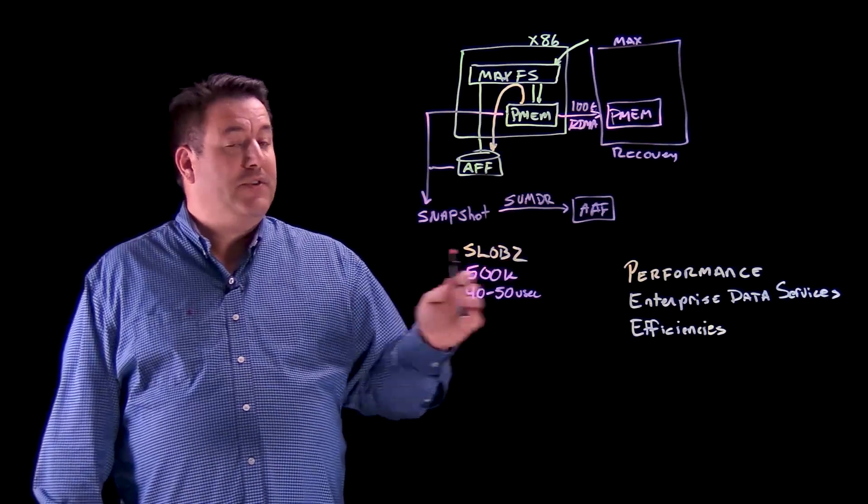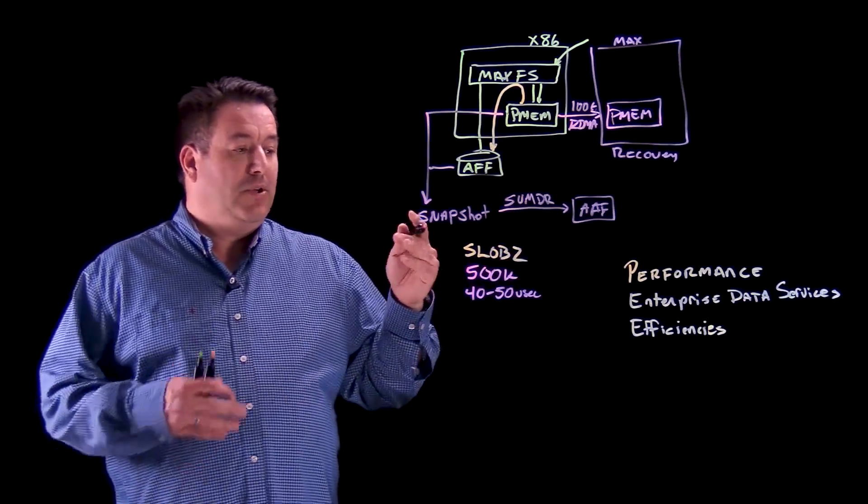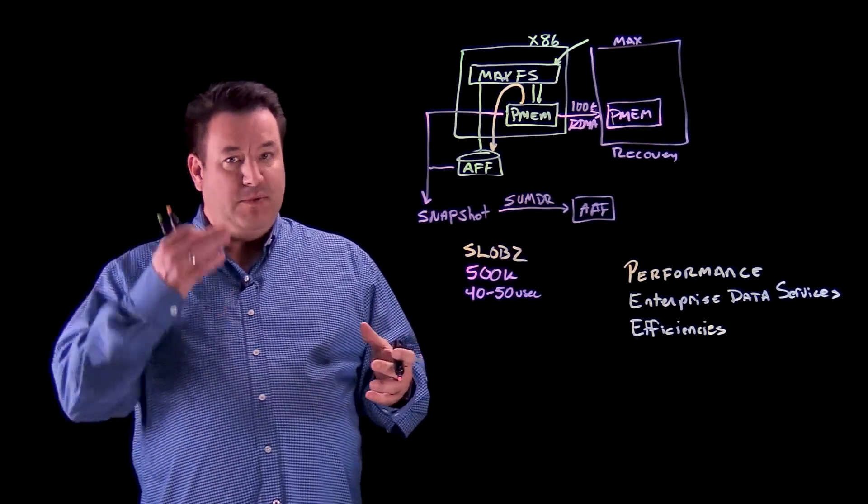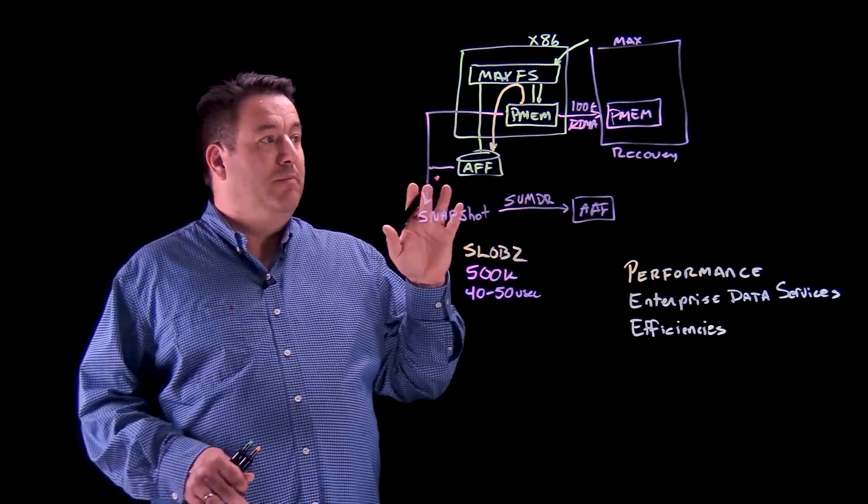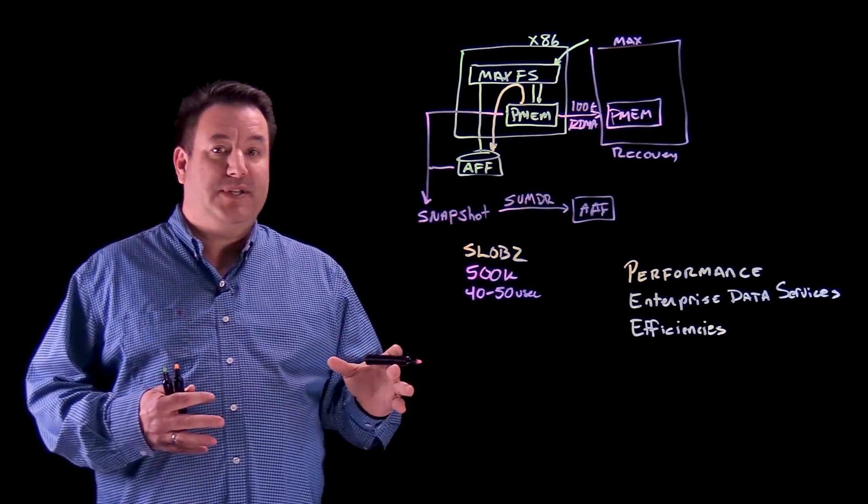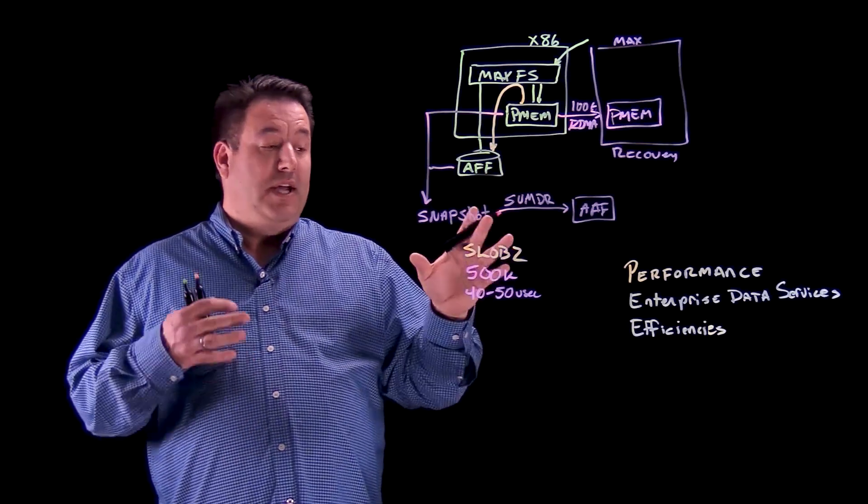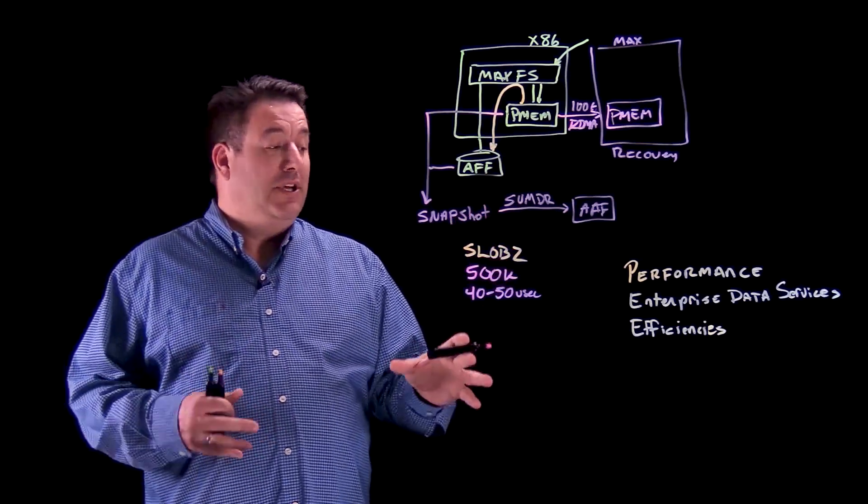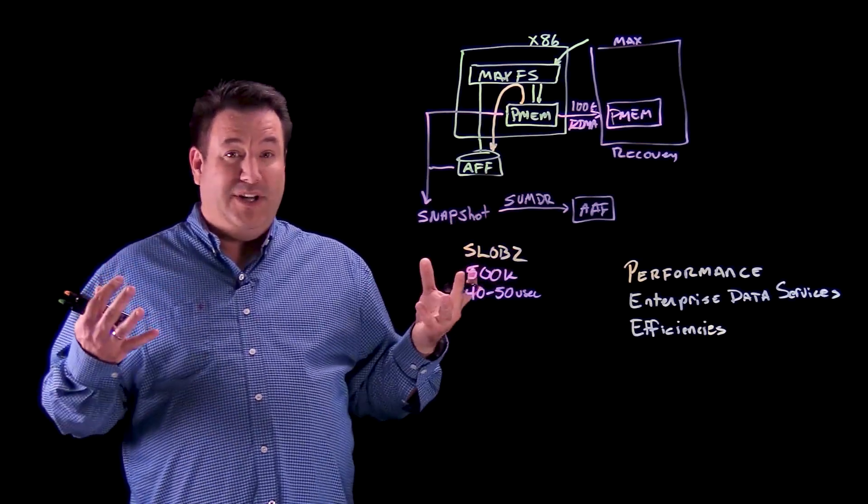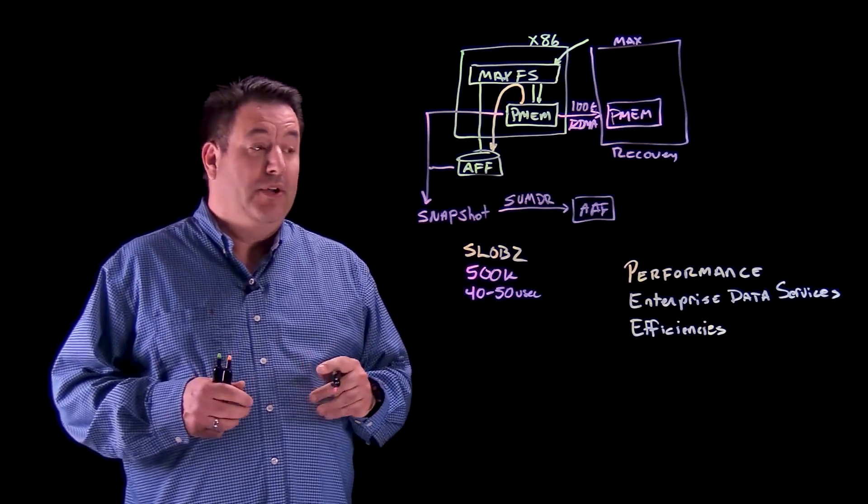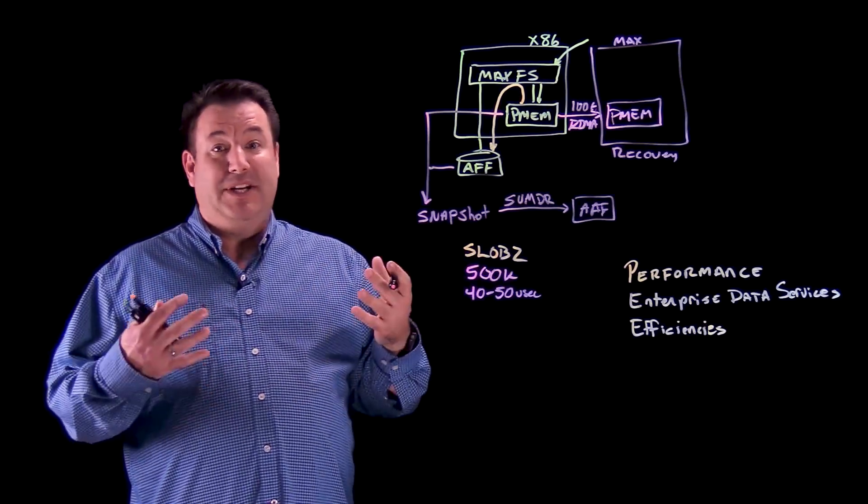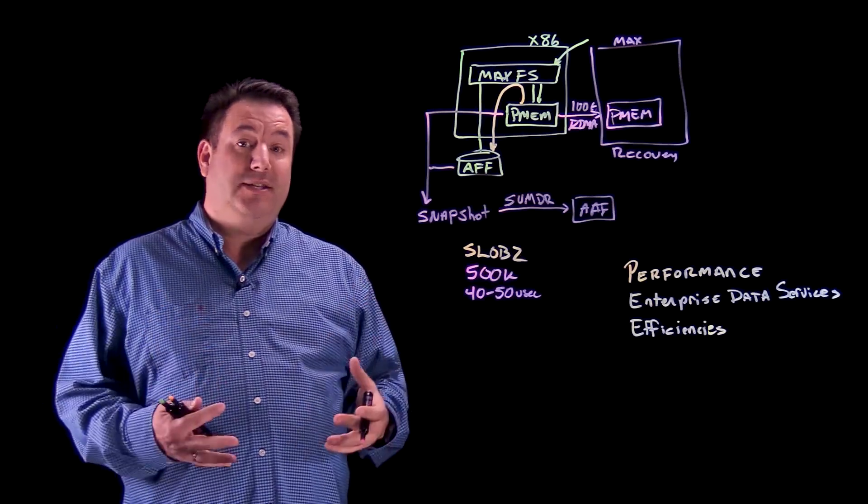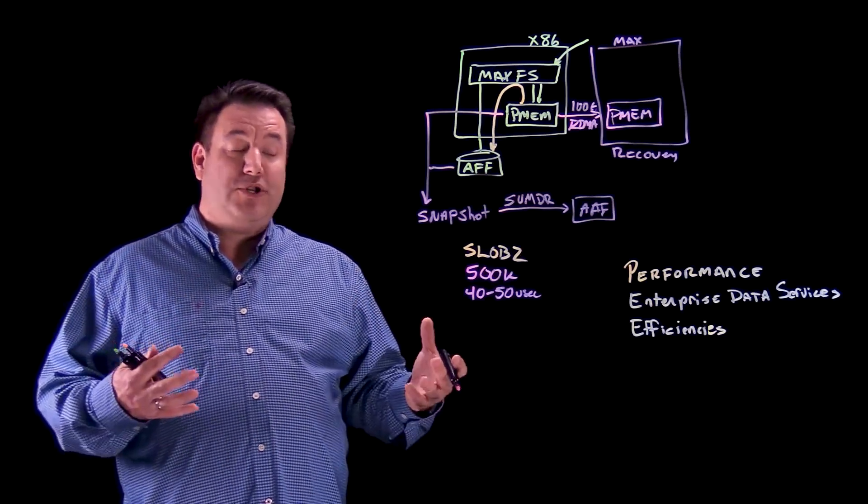And so when we talk about the efficiencies value, we look to utilization of the CPU, for example. Being able to better keep the CPU busy by reducing the latency of the application and database involved allows us to be able to better utilize the resources we have within the environment, allowing us to be able to potentially reduce the number of servers and licenses within the environment because we're more efficient.